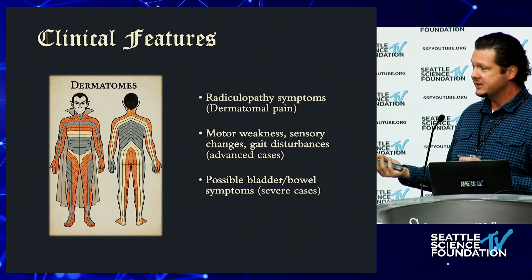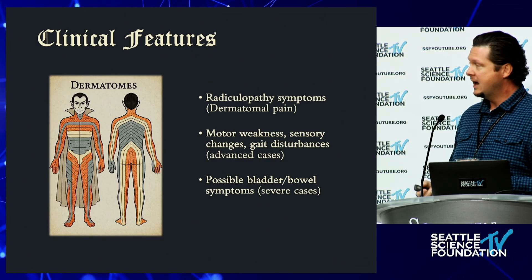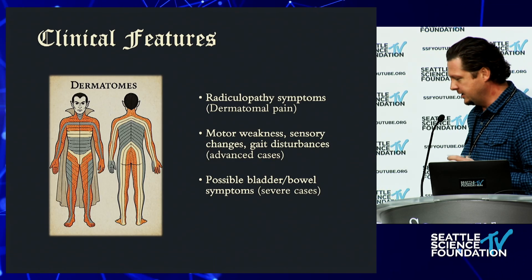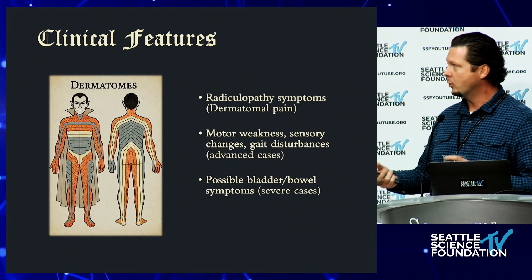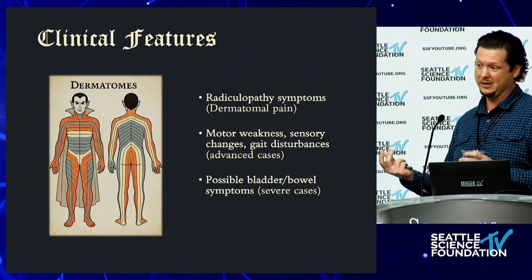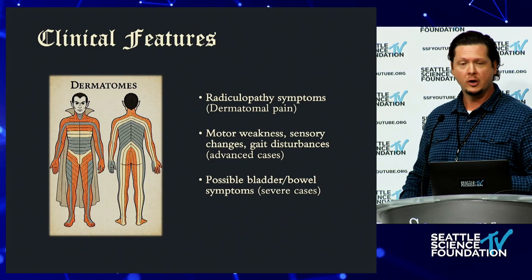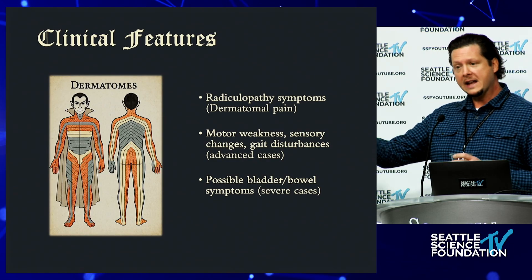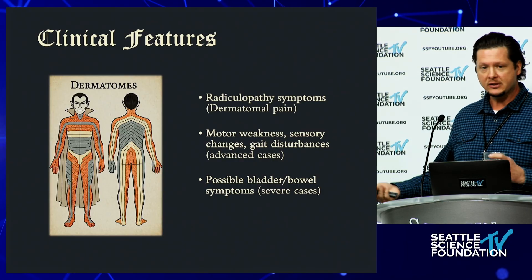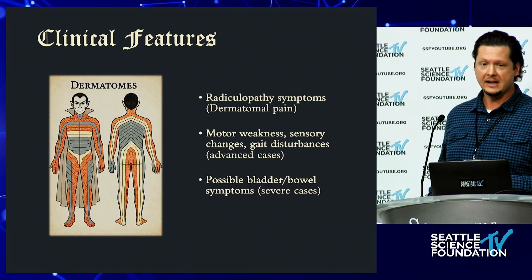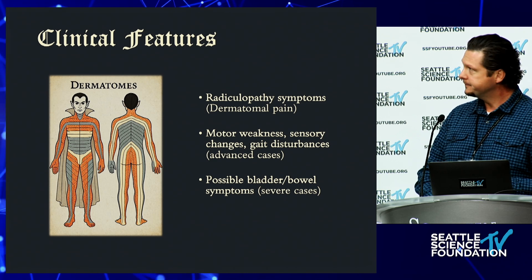Although the hallmark is neurogenic claudication, I've had many patients come in with what looks like a unilateral radiculopathy, and on imaging workup it turns out to be spinal stenosis manifesting in specific dermatomes. More advanced cases present with obvious neurological impairment and gait disturbances, and in the most severe cases cauda equina syndrome with bowel and bladder dysfunction.